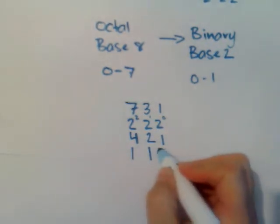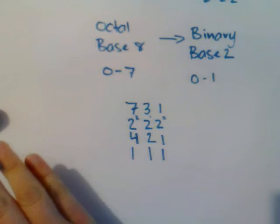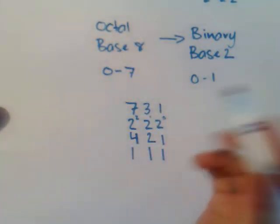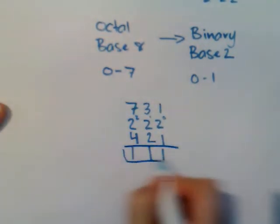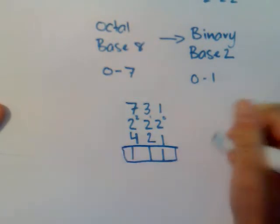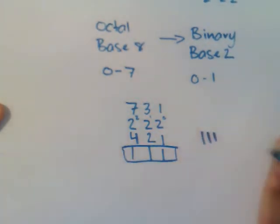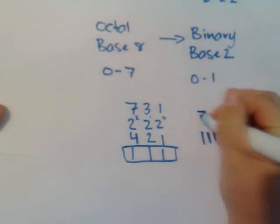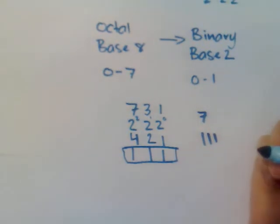So there are no more numbers remaining, so this is perfect, and that would be your number, your final answer. So 1, 1, 1 in binary equals 7 in octal.